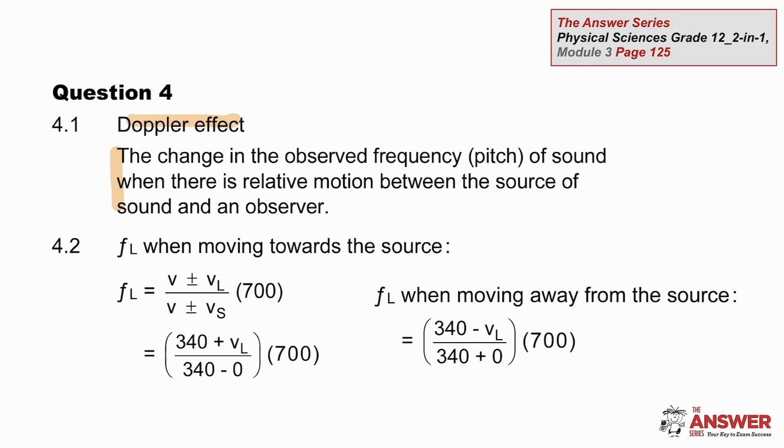Finally, the calculation. We substitute all the known values. We have the speed of sound, 340 meters per second. We have the frequency of the source, 700 Hz. And we have the speed of the source, which is 0.